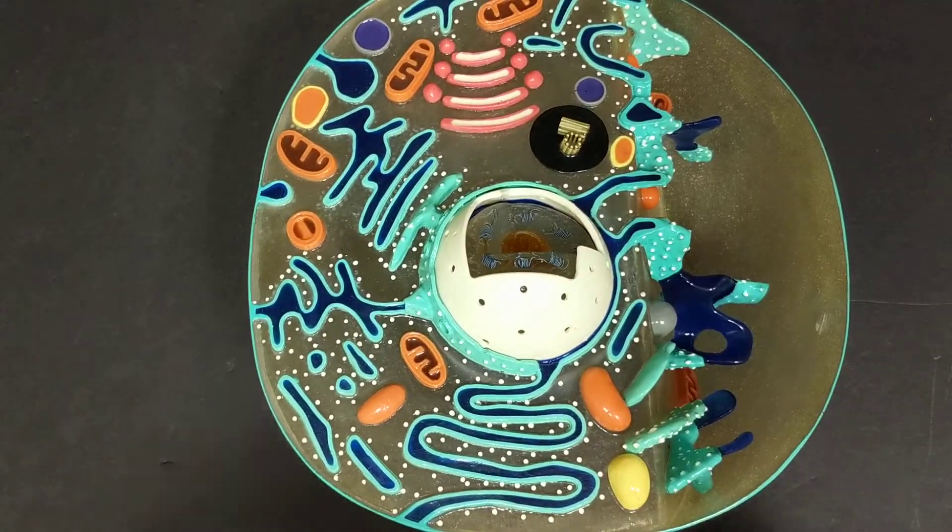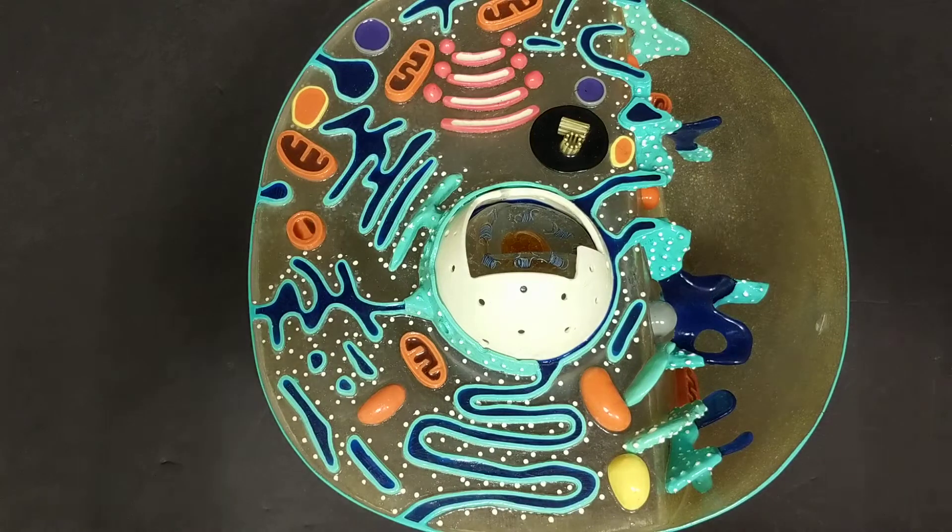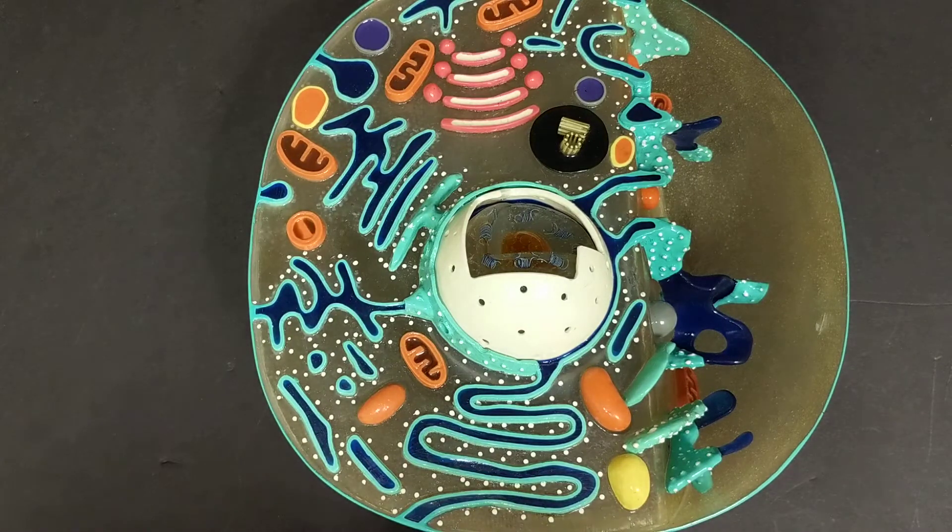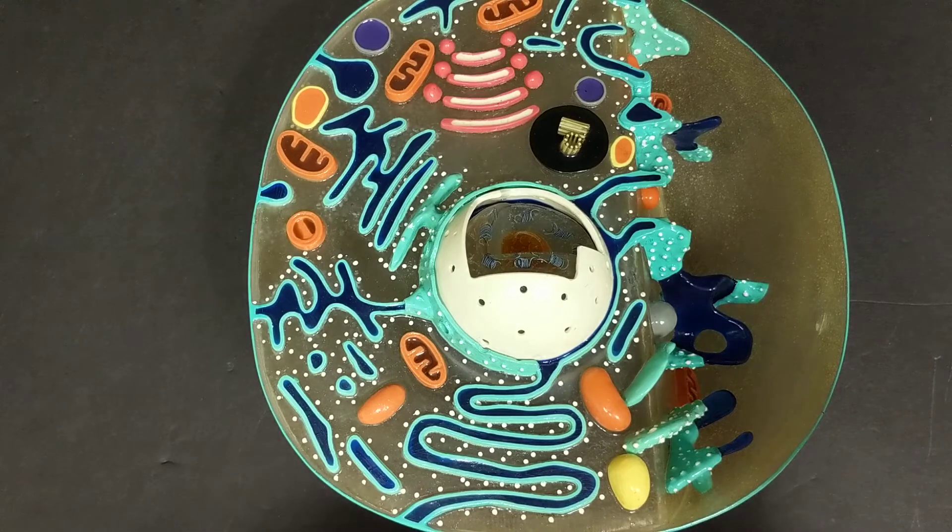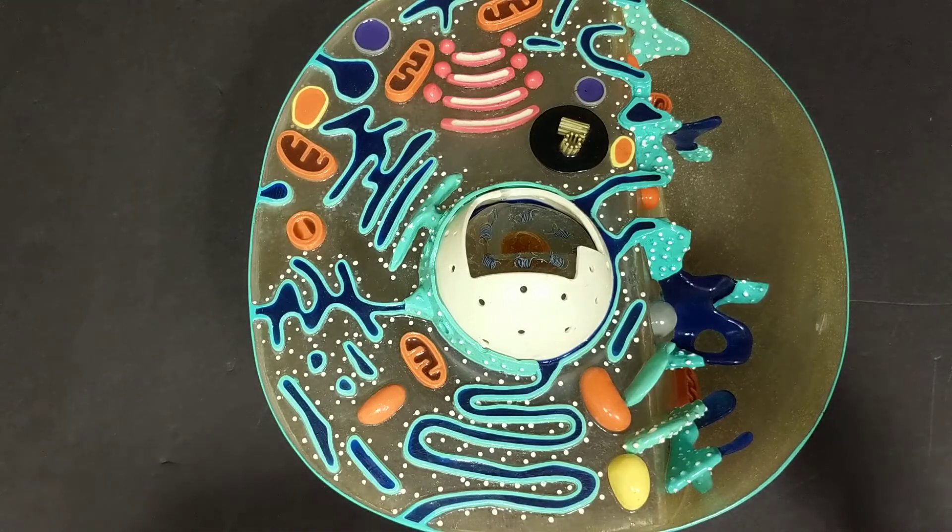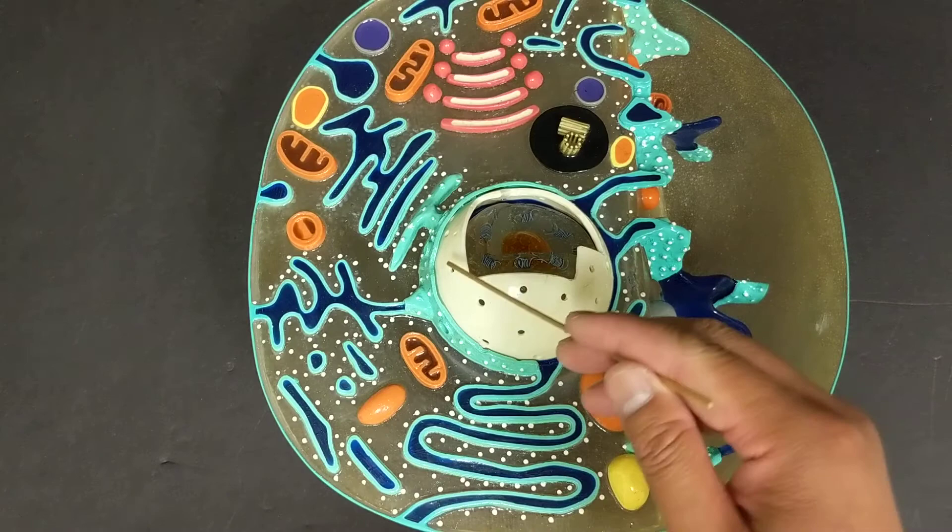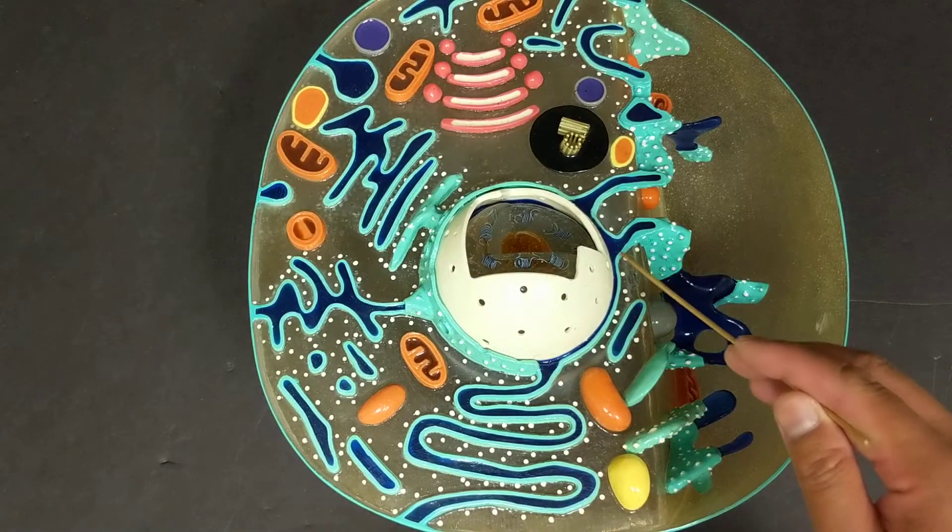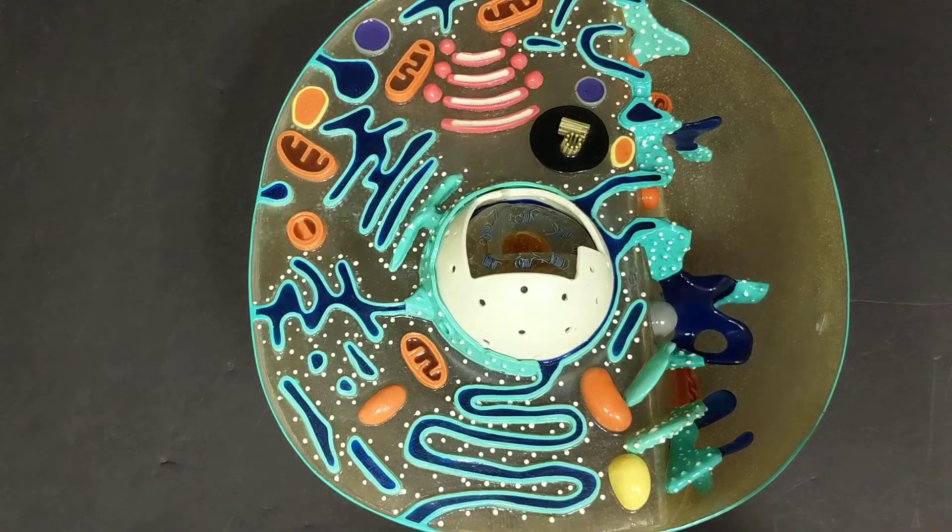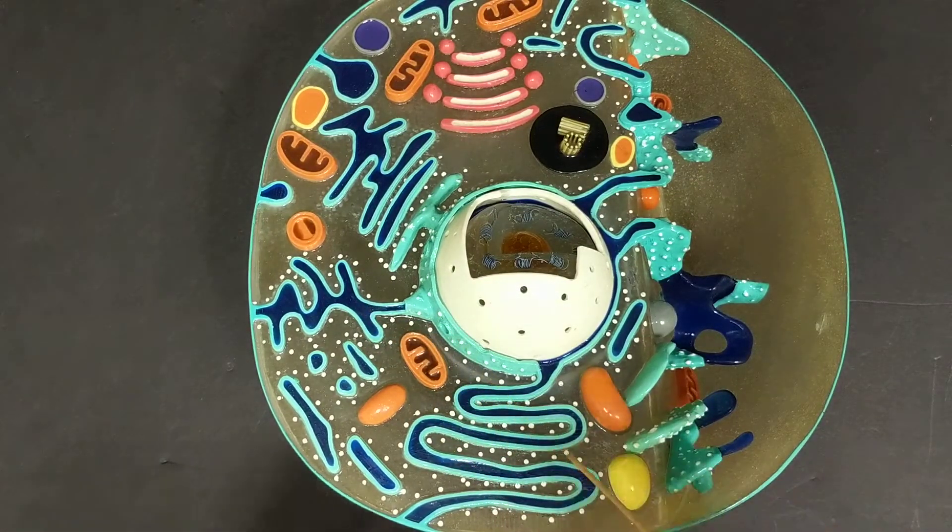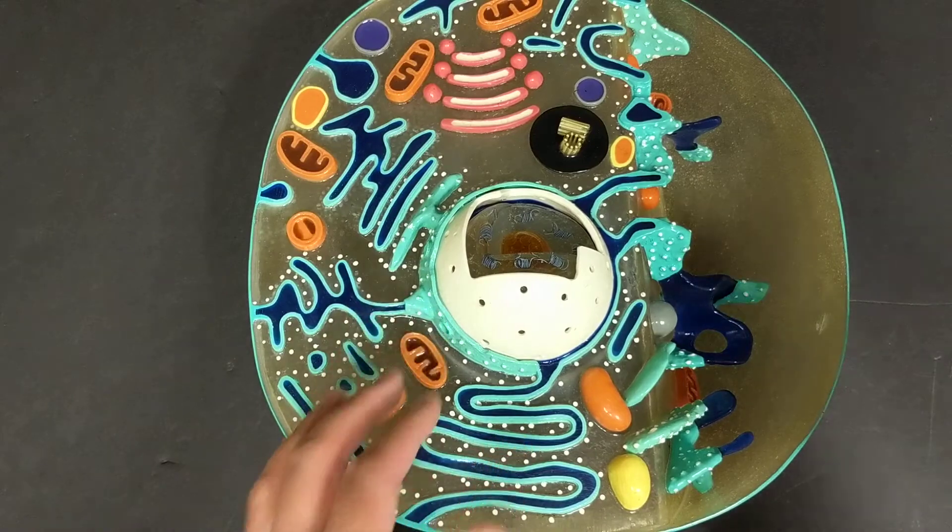In this case, you can see that it is different from the other model. The rough endoplasmic reticulum is still surrounding it but is going to be much more expansive. You can see that the rough endoplasmic reticulum is connected to the nucleus. It is adjacent, surrounding the nucleus.